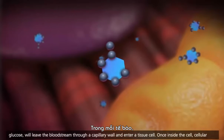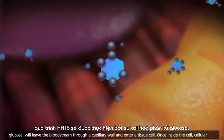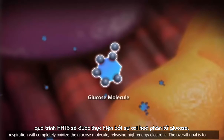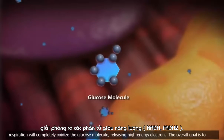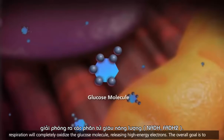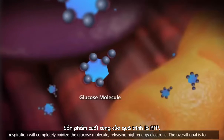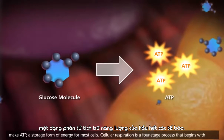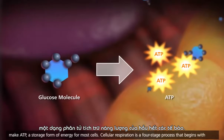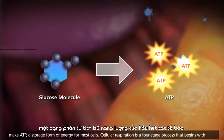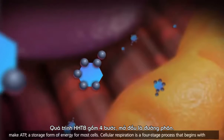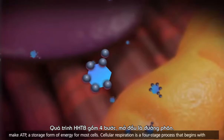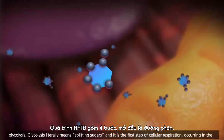Once inside the cell, cellular respiration will completely oxidize the glucose molecule, releasing high-energy electrons. The overall goal is to make ATP, a storage form of energy for most cells. Cellular respiration is a four-stage process that begins with glycolysis.